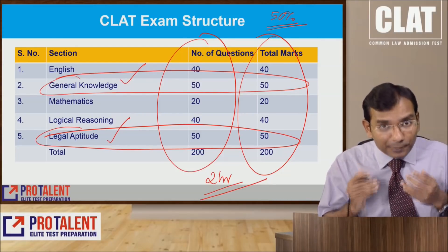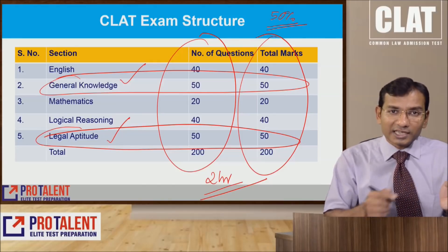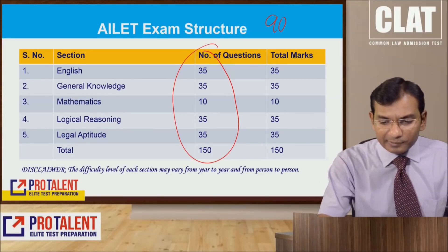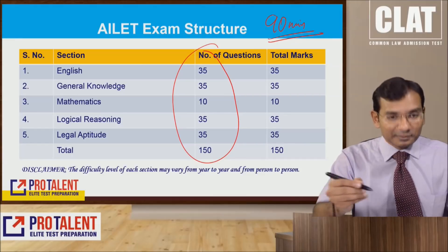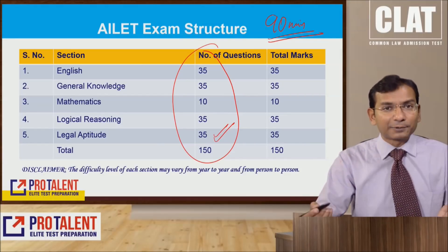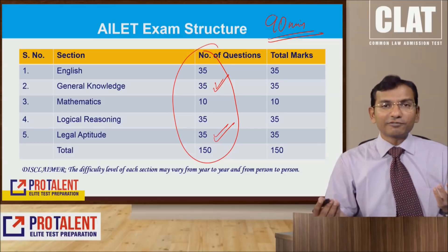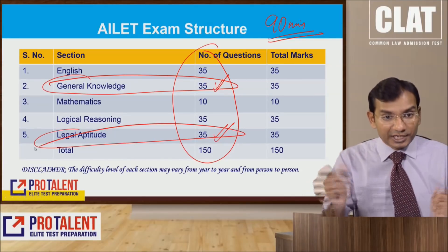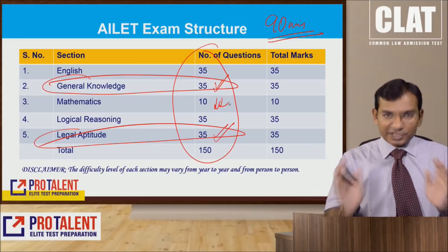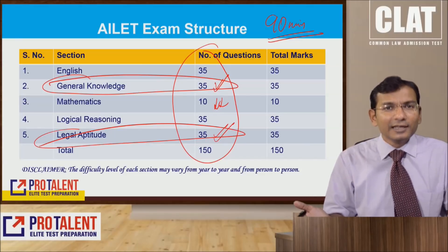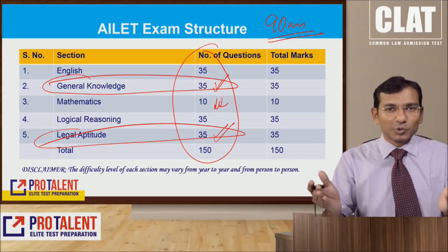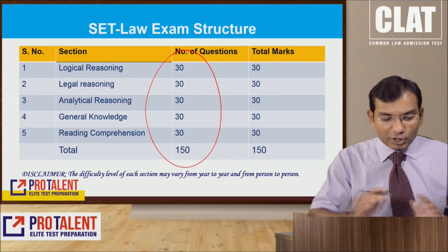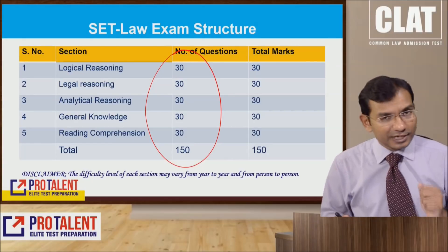Comparing this with AILET: it is a 90-minute exam instead of 120 minutes, and legal aptitude is 35 questions while general knowledge is also 35 questions — these two sections carry bigger weightage there. Maths has less weightage in AILET; if you are targeting AILET and want to skip maths, feel free. SYMBIOSIS has no maths in it at all.